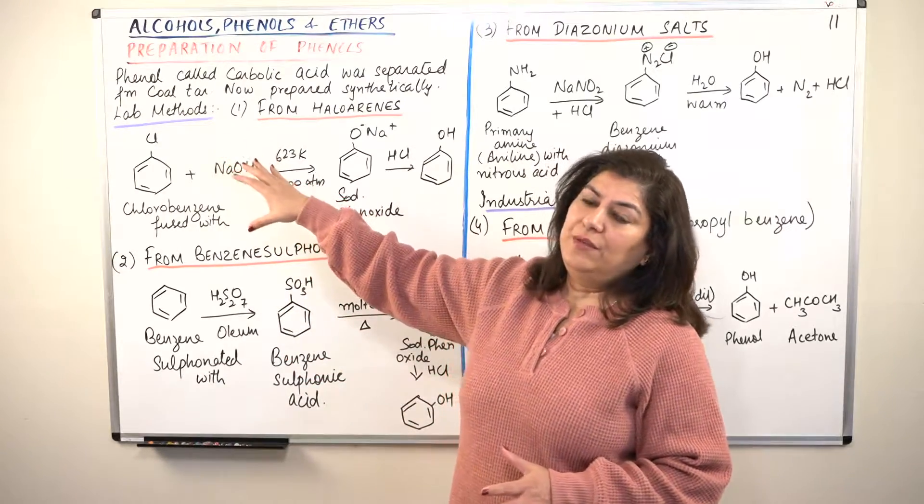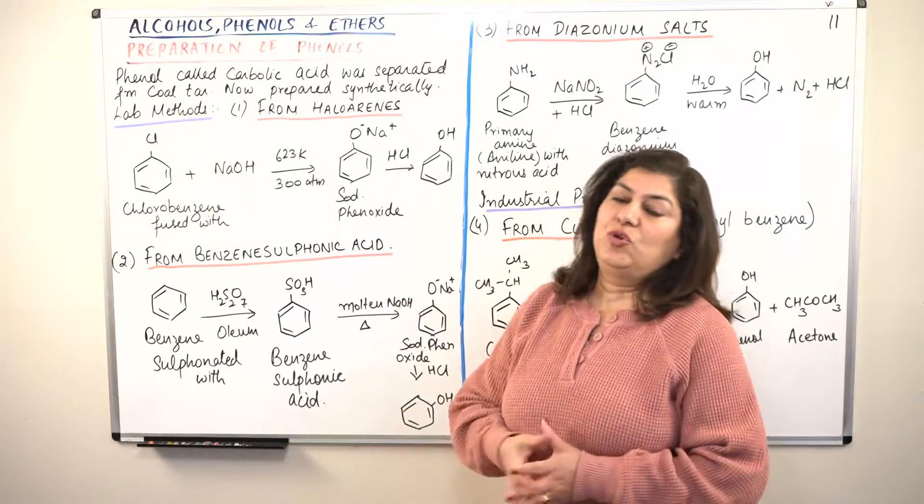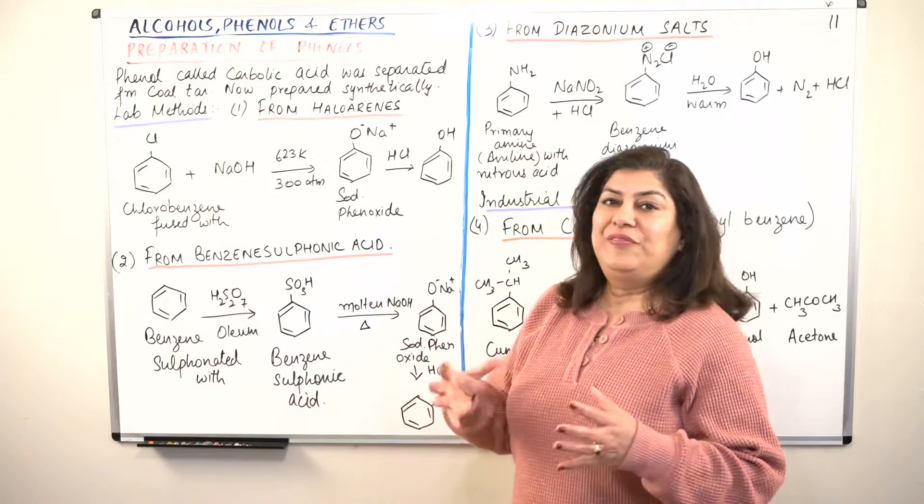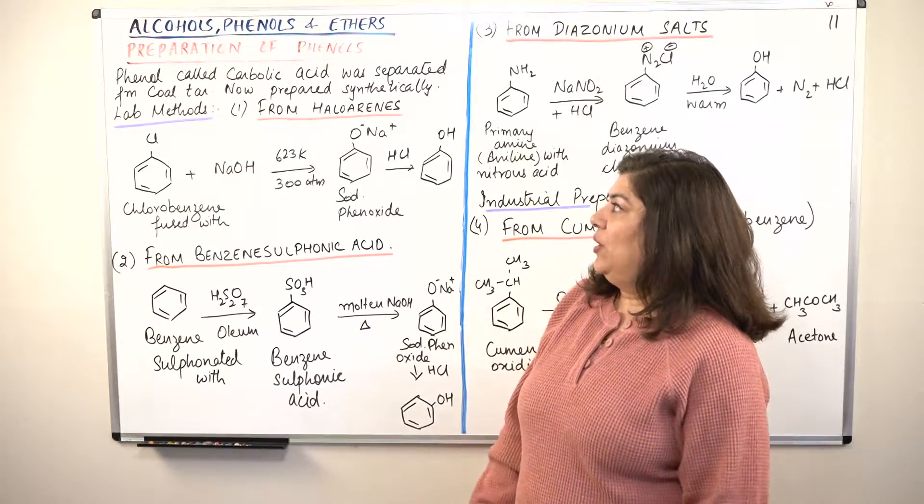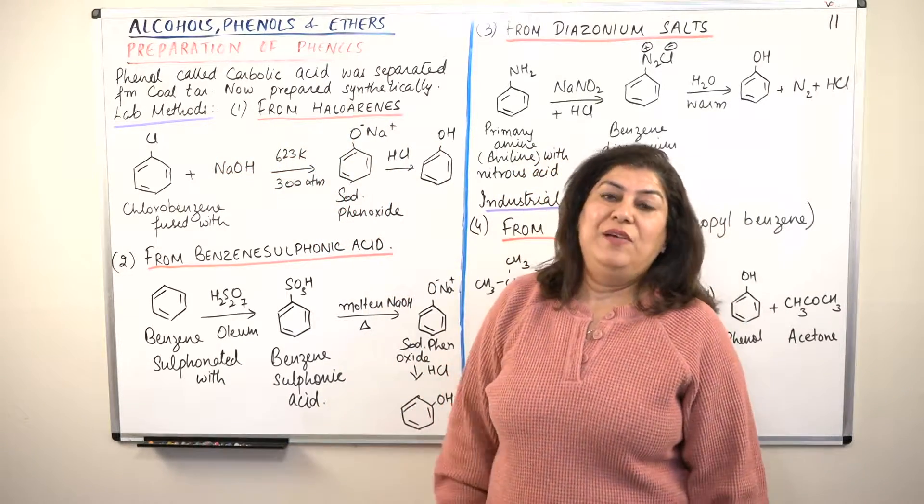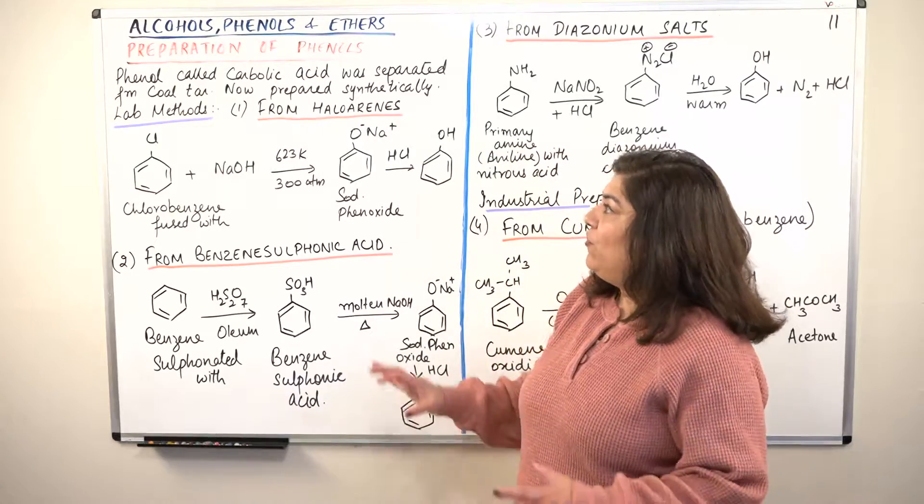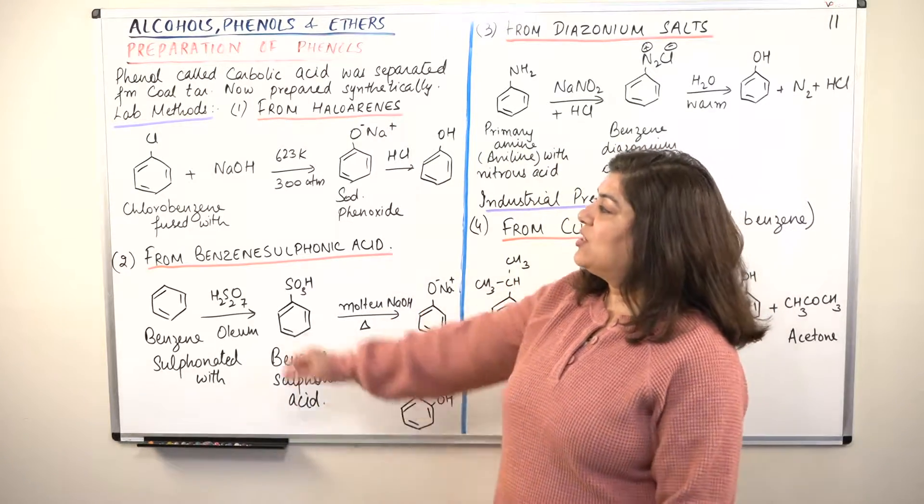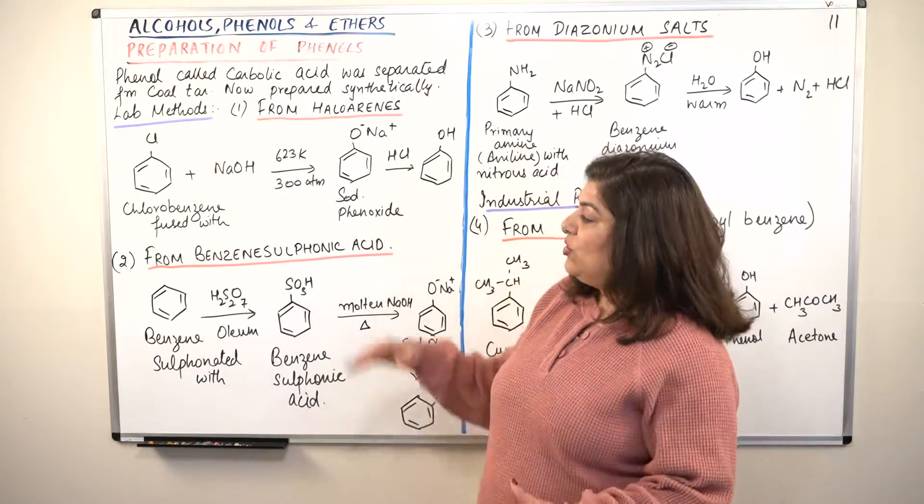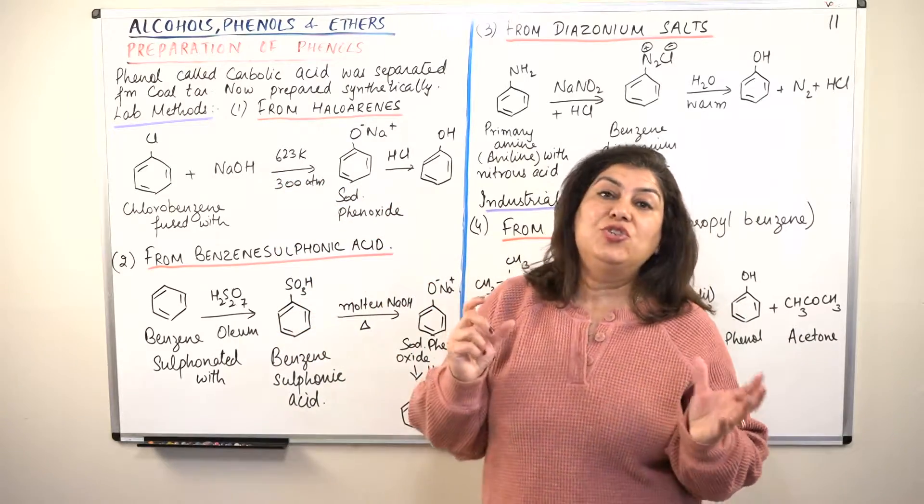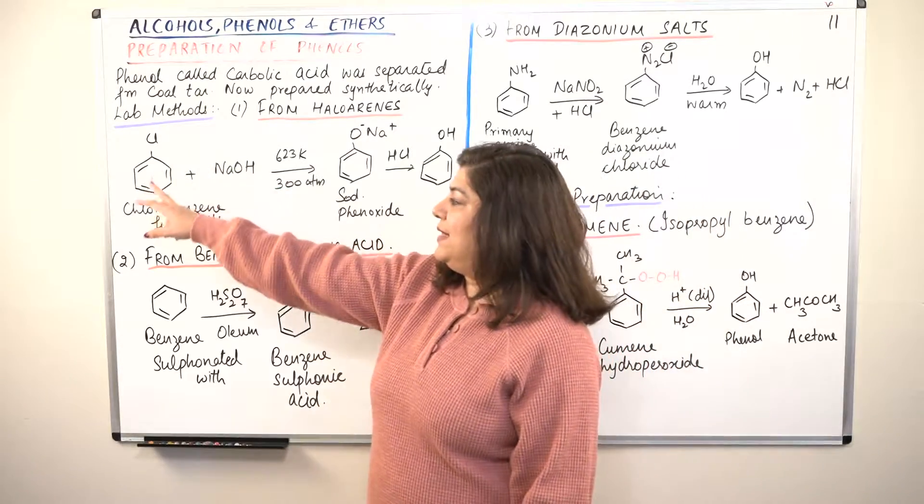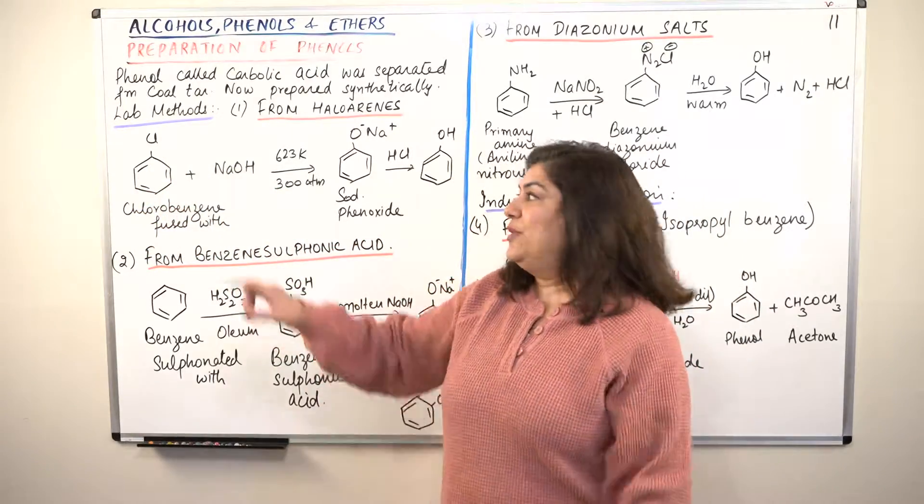In the laboratory we get it from different benzene derivatives, and industrially we get it from a benzene derivative known as cumene. Phenol is obtained from haloarenes. For this, the raw material that we use is chlorobenzene, and chlorobenzene is converted into sodium phenoxide. You will notice that in two of these preparations we obtain sodium phenoxide which on acidification gives us phenol. So you have chlorobenzene.